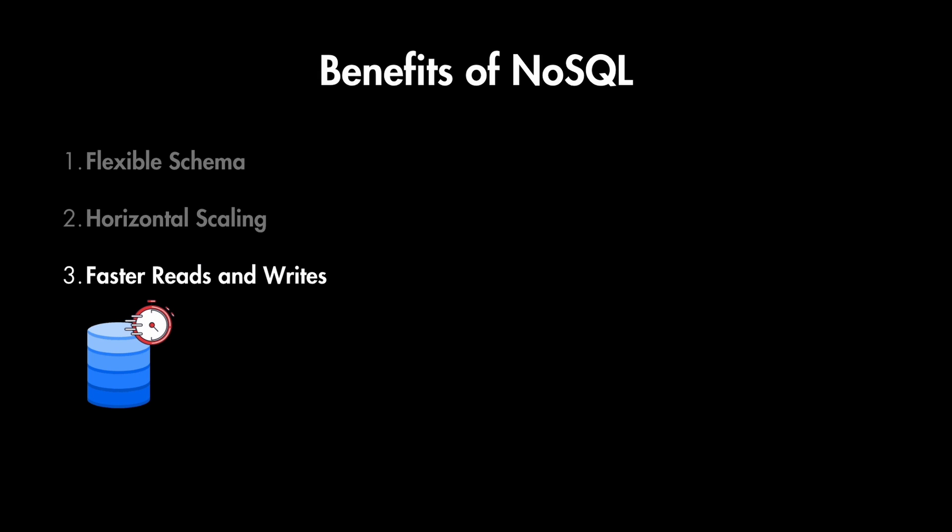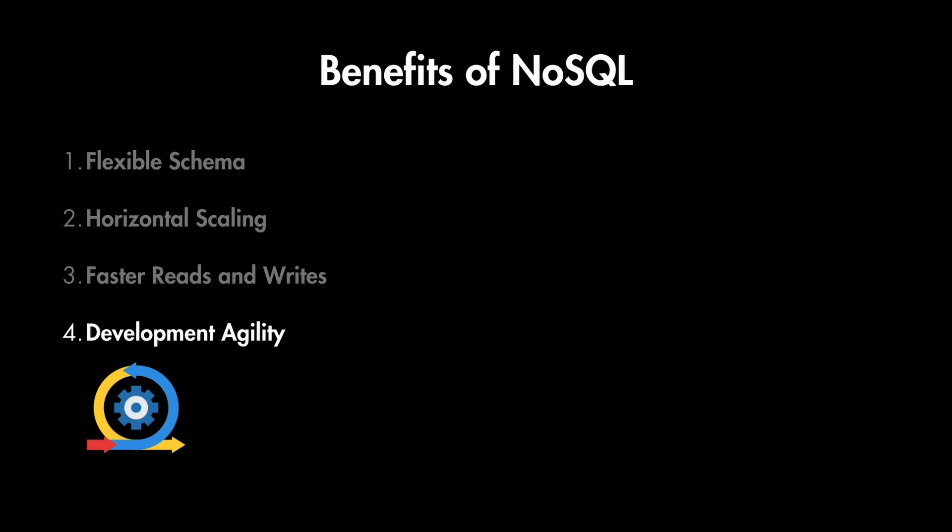Sometimes NoSQL databases are also good for faster reads and writes. If your data doesn't have a lot of complex relationships and you're primarily storing and retrieving individual units of information, then NoSQL databases, especially key-value stores, can be faster due to less complex querying. They also provide development agility, because the flexible schema and focus on specific data models can streamline development for certain applications.